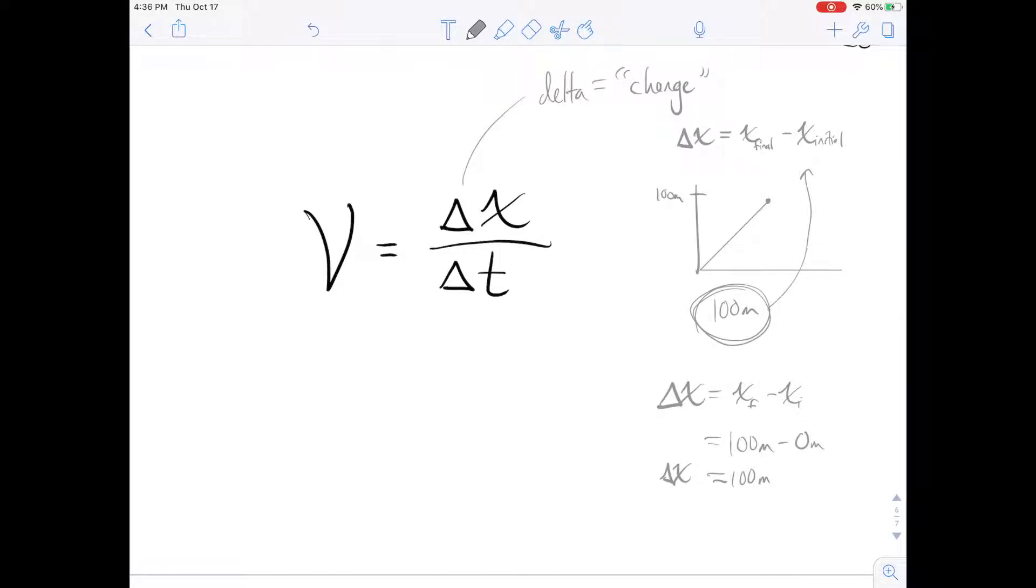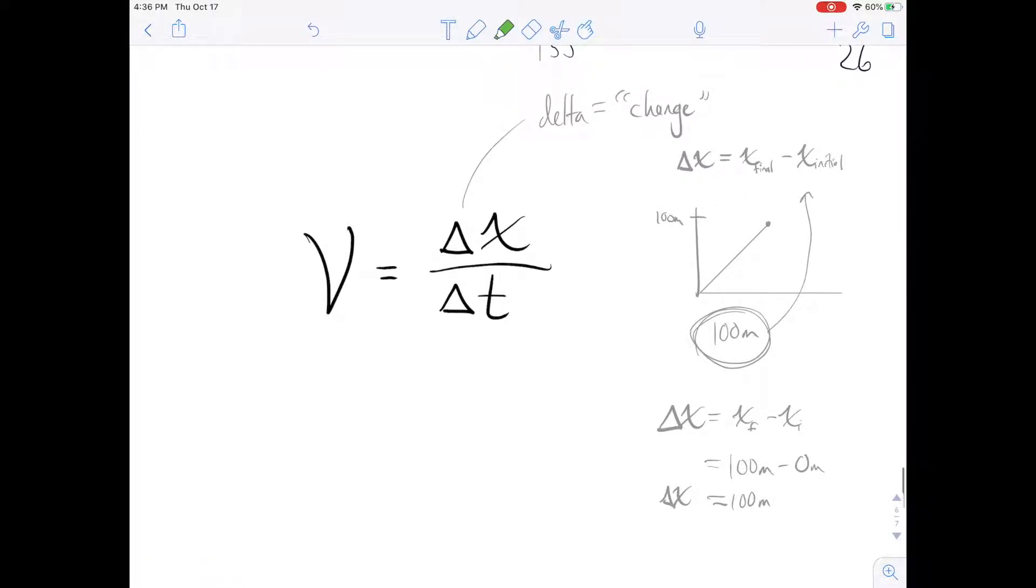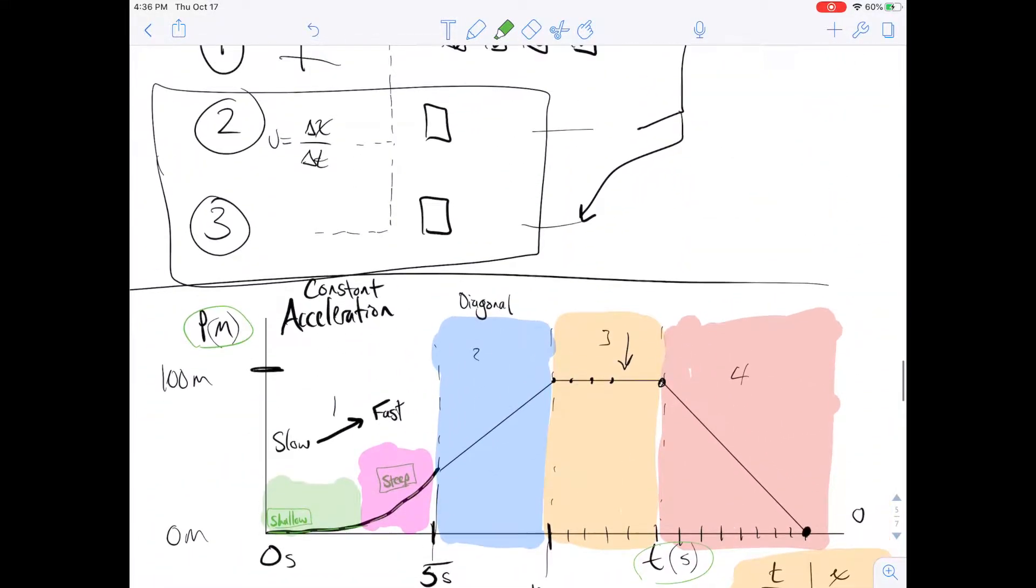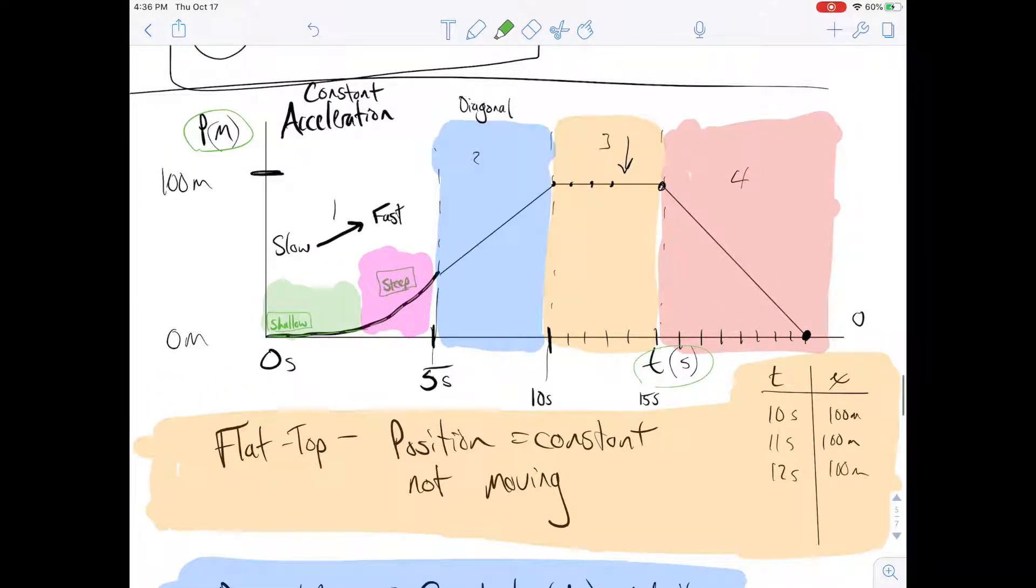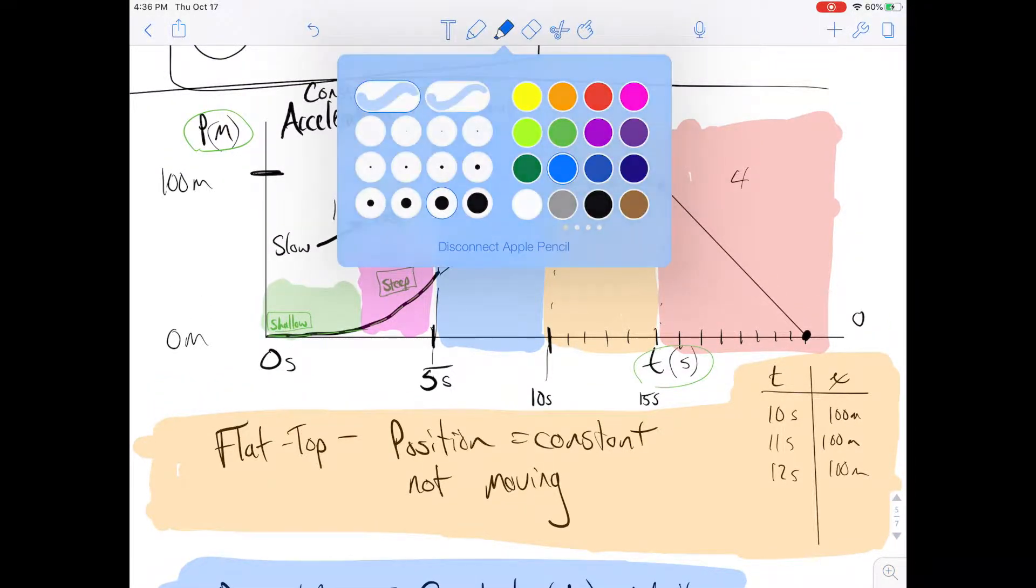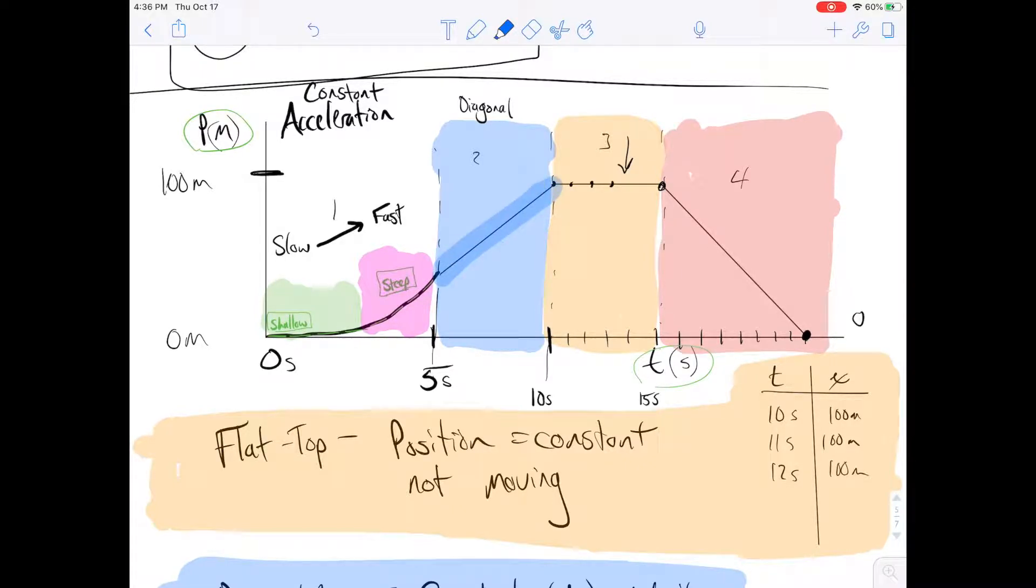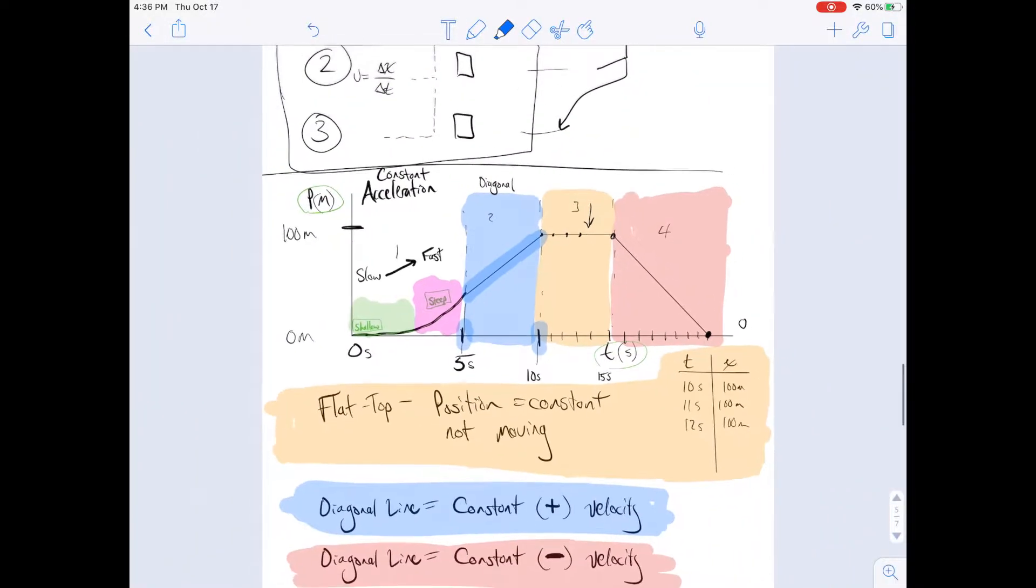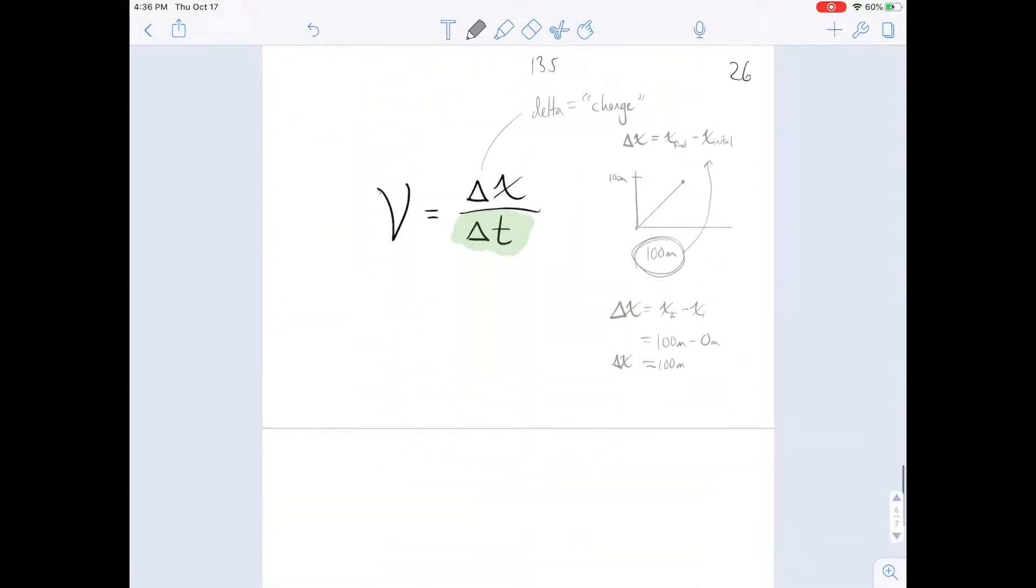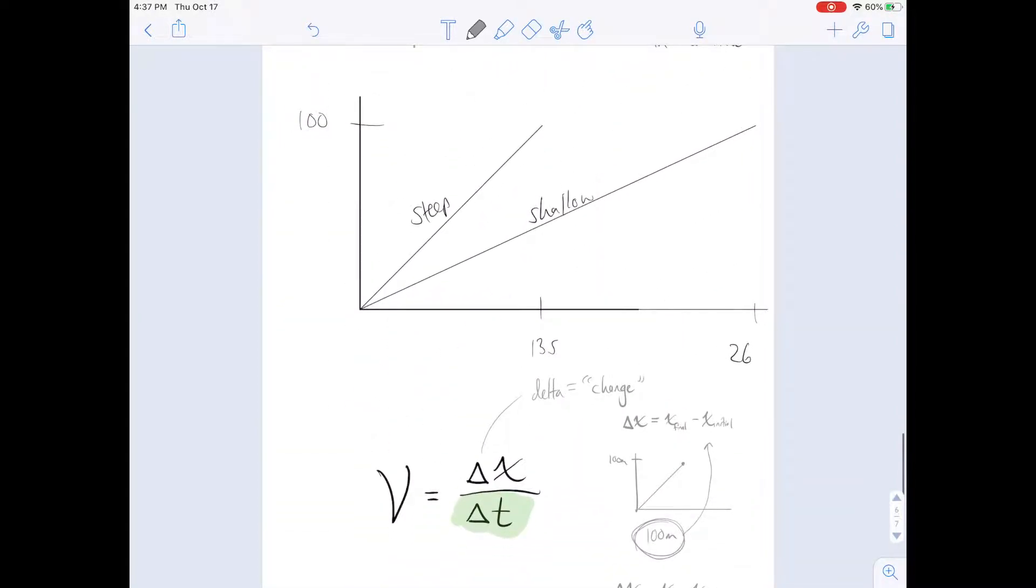But we're going to run into this in a couple other spots, particularly when it comes to time. For instance, in the last video, when we talked about maybe this region, this blue region, in this particular part of the line, we've gone from 5 seconds to 10 seconds. And so there, we know that that total time is 5 seconds. And that's the change in time. So we'll get to that in a second. So what we want to see is we've picked some times here, 13 seconds, 26 seconds.